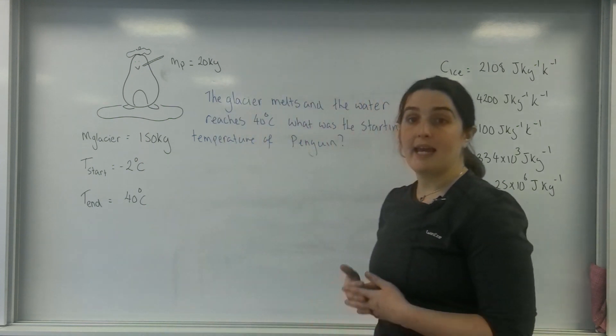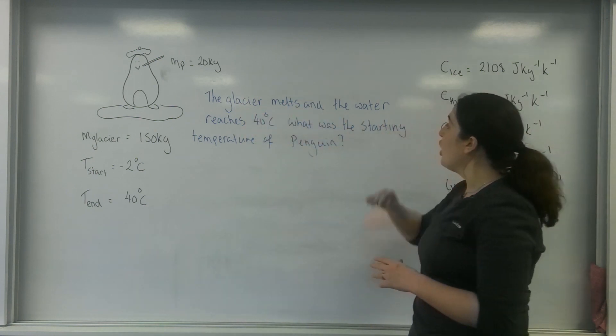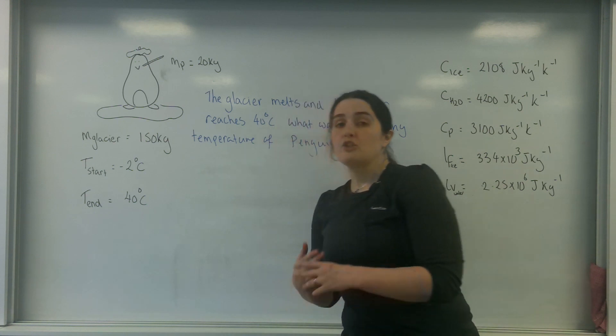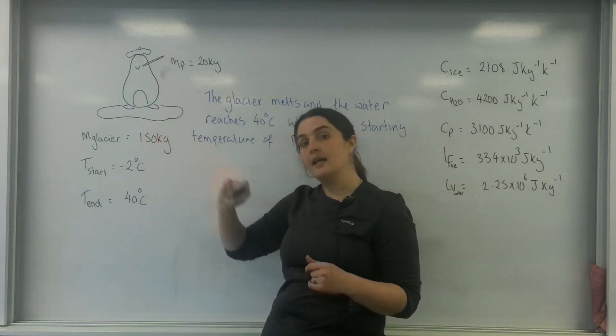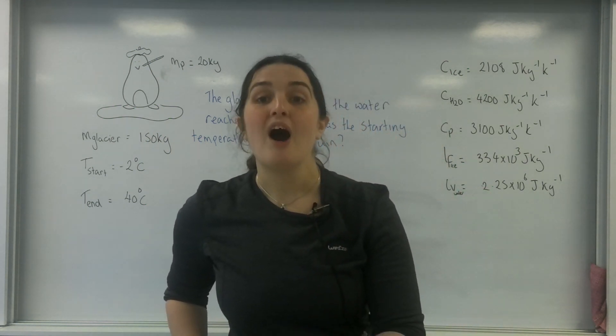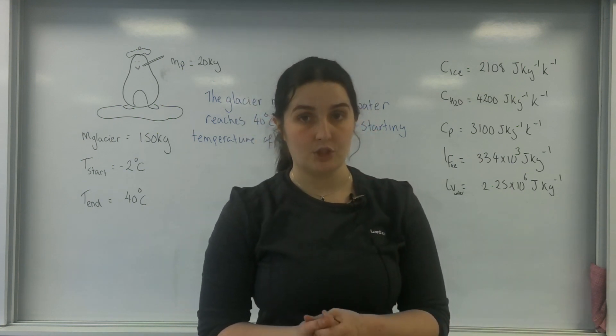So what I've got here, my question is that the glacier melts and the water reaches 40 degrees C. What was the starting temperature of the penguin? So, penguin has lost energy, glacier has gained. If I can find out how much energy the glacier has gained in total, I can start using equations to work out the penguin situation.